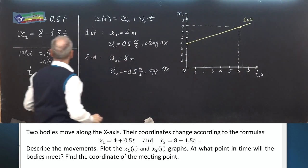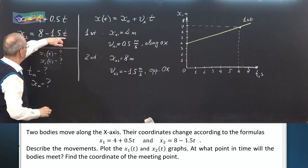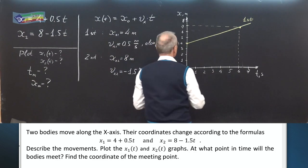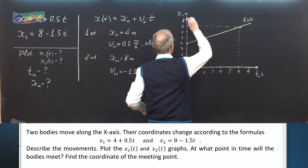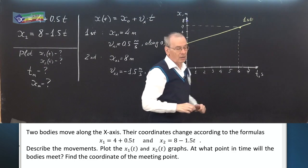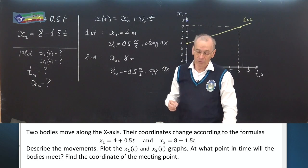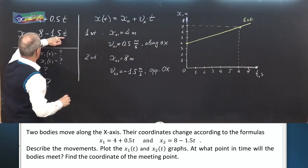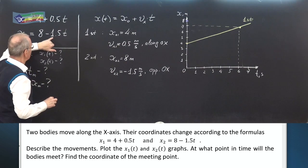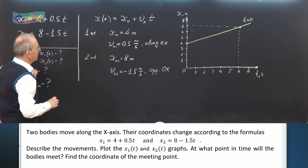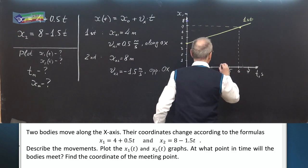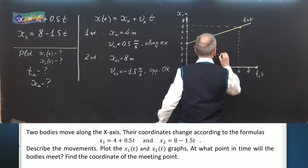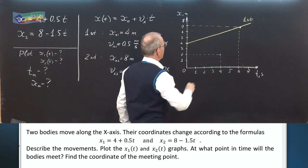The second body at the initial moment in time has the coordinate 8. Now, let's use a moment in time, for example, 3 seconds or 4 seconds. 4 seconds. 4 times 1.5 is 6. 8 minus 6 gives 2. 4 seconds, 2 meters. Here is the second point of the straight line.